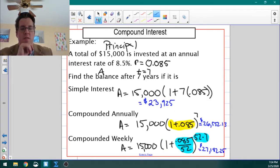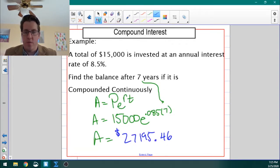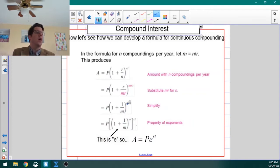One thing I want to draw attention to is you're going to use the general compounding formula when you can find a number of compounds. So for example, weekly would be 52 times. Quarterly would be four times. If you hear or read continuously, though, you're going to use this formula.